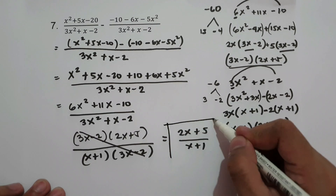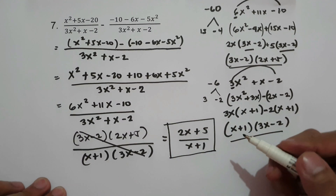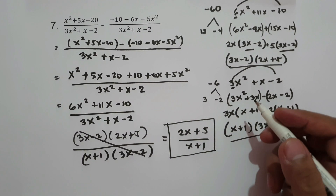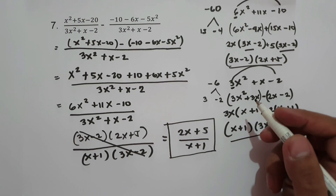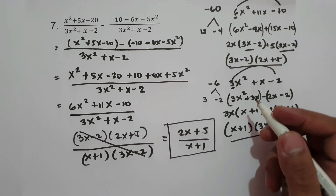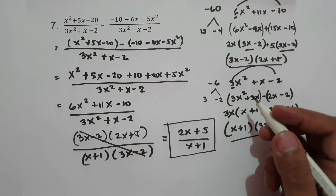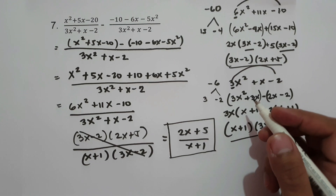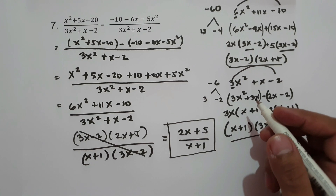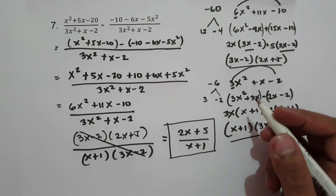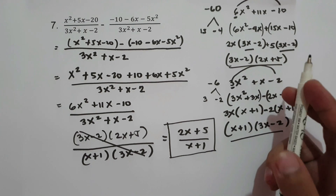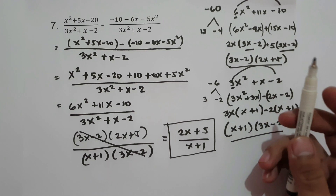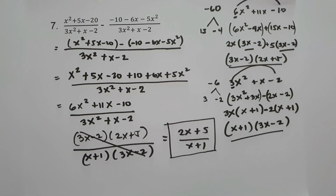So again, whenever you add or subtract rational algebraic expressions with the same denominator, we simply copy the denominator and then add or subtract their numerators. Thank you so much — I hope you learned from this video. See you again next time.